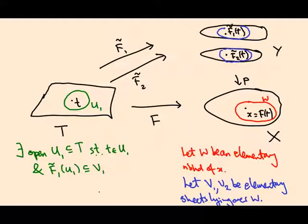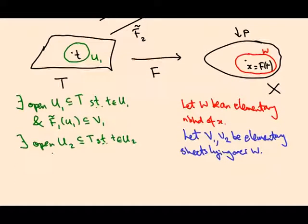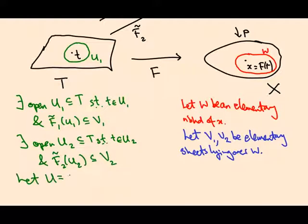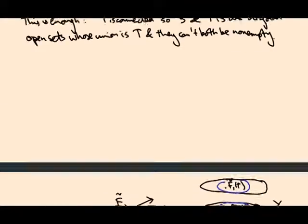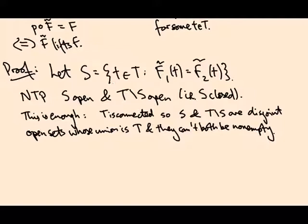And similarly, there's an open U2 containing t, such that F2 tilde U2 is contained in V2. And I'm just going to let U be the open set which is the intersection of those two. Okay, now that we've set everything up, what do we actually want to do? We want to prove that this set S is open and that its complement is open.